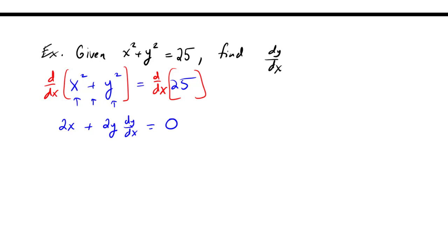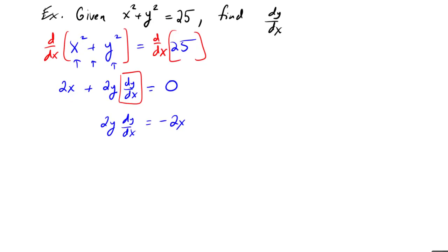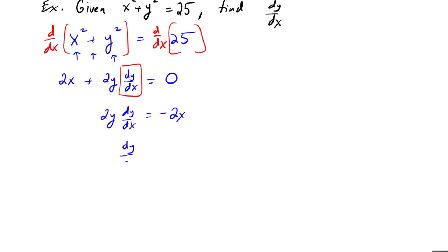That's the derivative taken. Now it's really an algebraic problem where I have to solve for dy/dx. I'll leave that on the left side, subtract the 2x to the other side. So I get 2y dy/dx equals -2x, and then divide over: dy/dx is -2x over 2y.